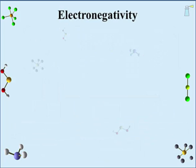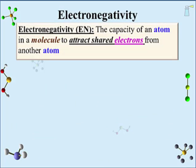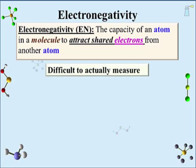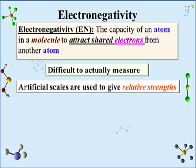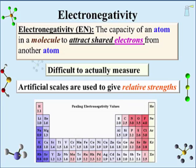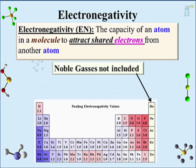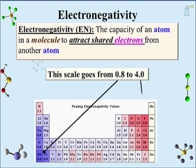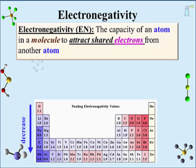How does a student know which type of bond two atoms form? The answer is electronegativity. Our definition of electronegativity, or EN, is the capacity of an atom in a molecule to attract shared electrons from another atom. That is actually very difficult to measure, so artificial scales have been developed to give relative strengths of the capacity to attract for different atoms. The most common scale is the Pauling scale. Since noble gases are not very reactive, the scale generally does not include them. The rest of the elements have values ranging from 0.8 at the bottom left to 4.0 at the top right.